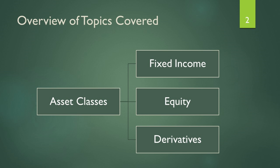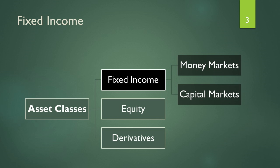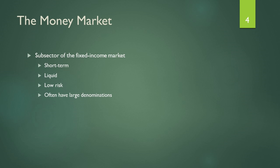First, the money market. The money market refers to a market where money and other money-like or cash-like, very liquid securities are bought and sold. Liquidity within financial economics means that the holder of any asset or security should be able to sell that security off without much trouble and without a depreciation in value.